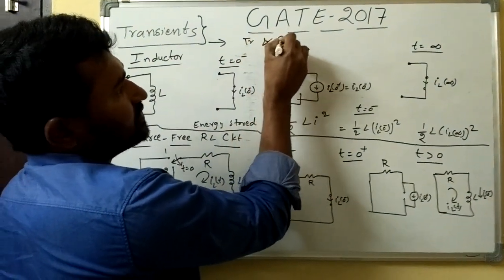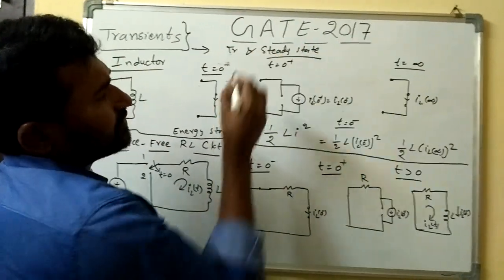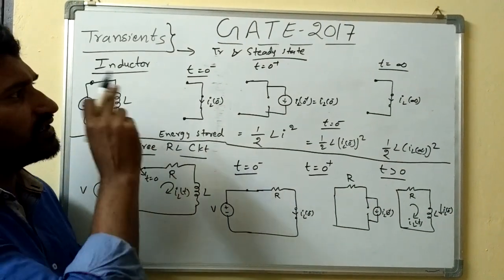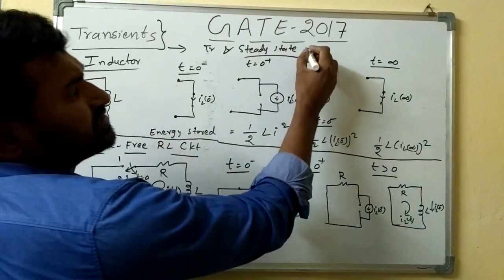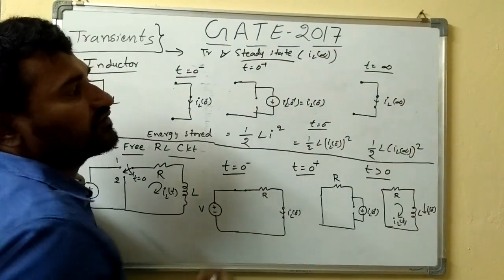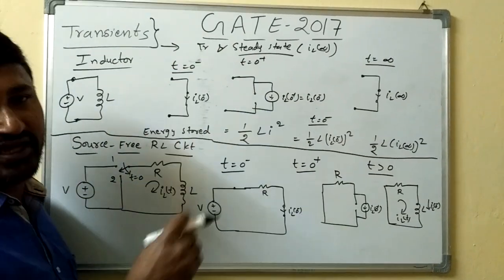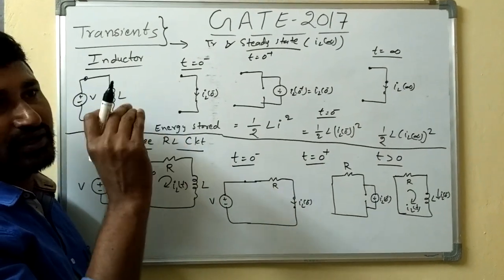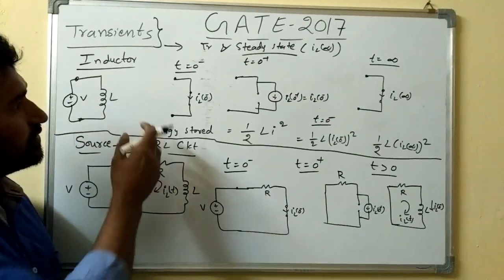So in an inductor there is a transient state and there is a steady state. Steady state means when you apply this voltage continuously up to infinite time, the inductor will reach its steady state. At the steady state the current will be different — generally we take it as I_L(∞). Transient state is like an uncertainty state; the steady state is the final state, also called a stable state. The stable state will have finite values.